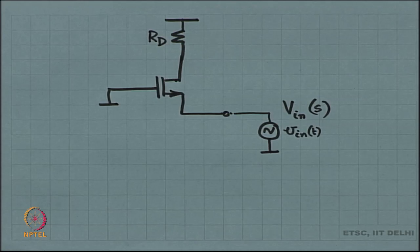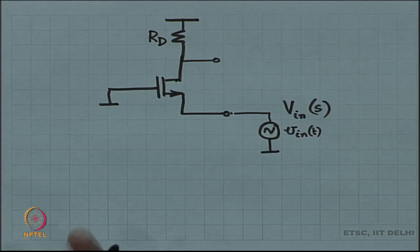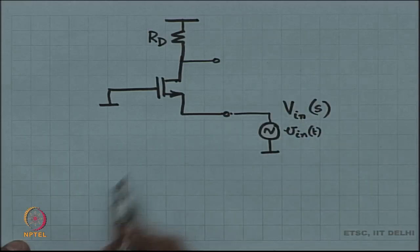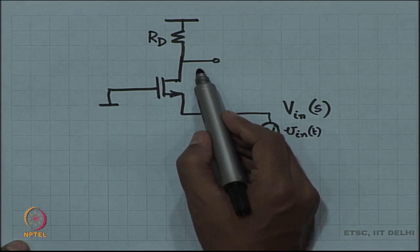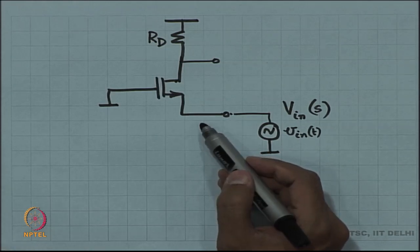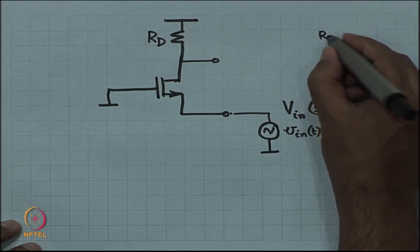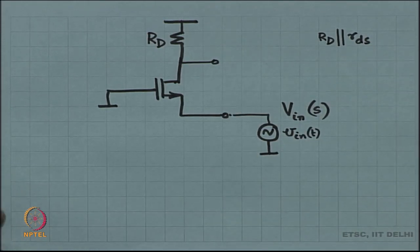The analysis is always with the help of the Norton equivalent method. In the Norton equivalent method, you first look at the output impedance. When you look at the output impedance, you null the input signal source. When you null the input signal source, the source is at ground and therefore the output impedance looking in at the output is Rd looking upwards and Rds looking downwards. So the output impedance is Rd in parallel with Rds, which is the DC quantity.